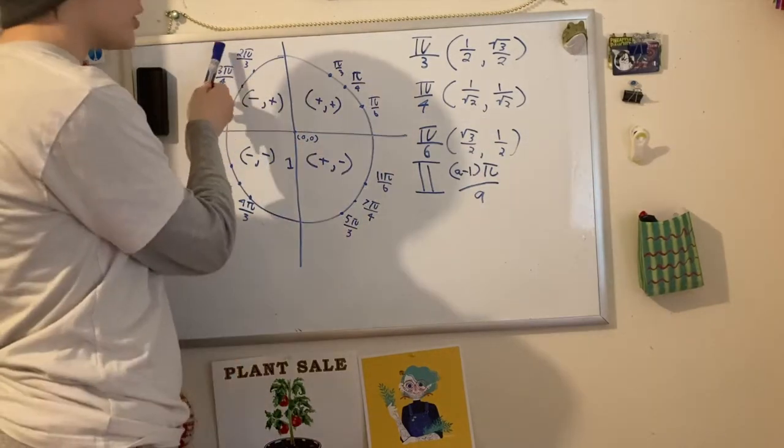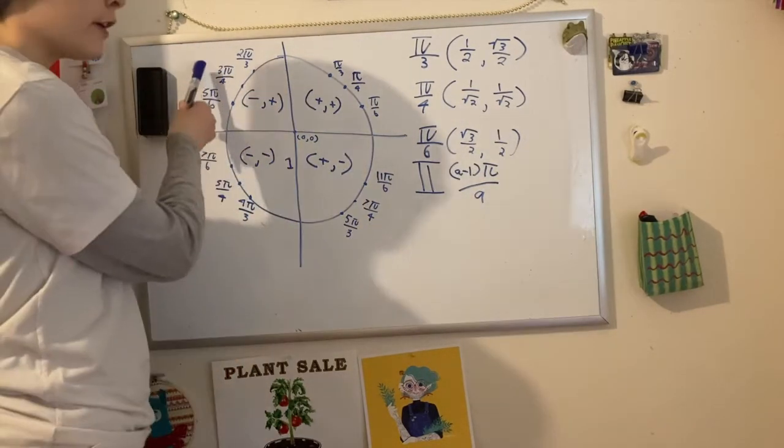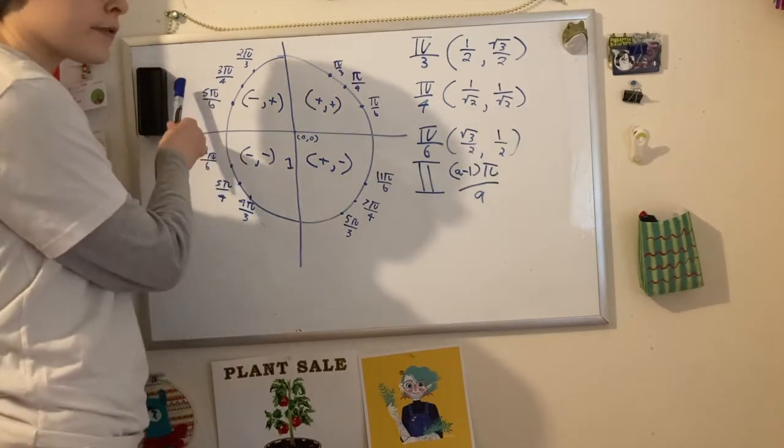As you can see, this is 2/3, and 3 minus 1 is 2. This is 3/4. 4 minus 1 is 3, and this is 5/6. 6 minus 1 is 5.